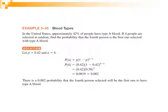Another example: in the United States, approximately 42% of people have type A blood. If four people are selected at random, find the probability that the fourth person is the first one with type A blood. Here p = 0.42 and n = 4. Applying the geometric formula: P(n=4) = 0.42 × (1 − 0.42)^(4−1) = 0.42 × (0.58)^3. This gives the probability that the fourth person selected will be the first one to have type A blood.